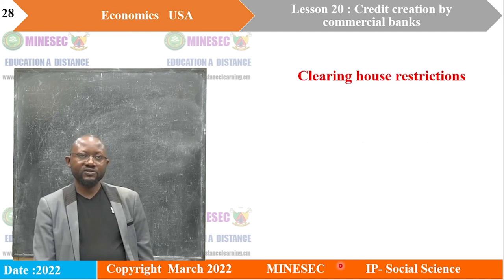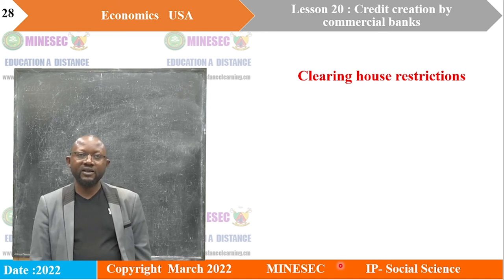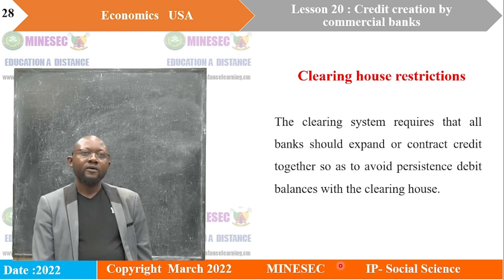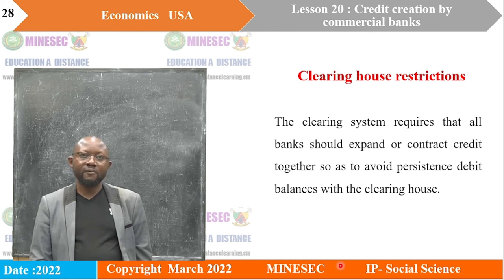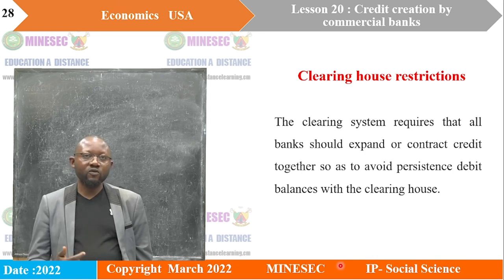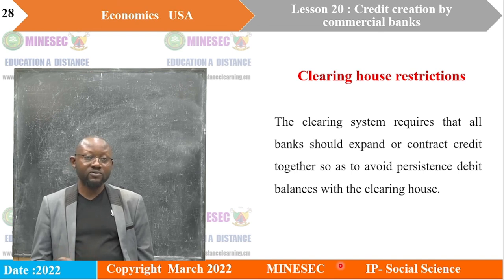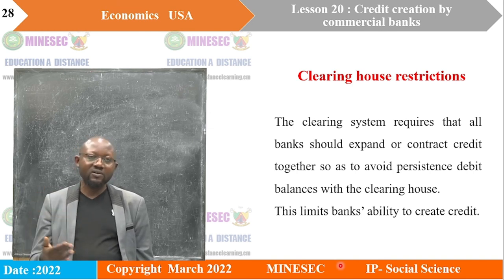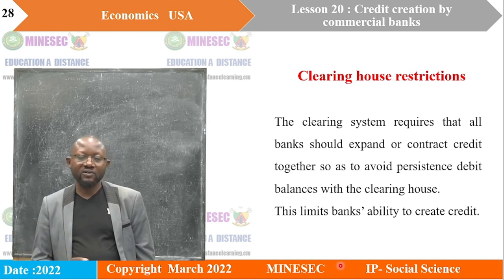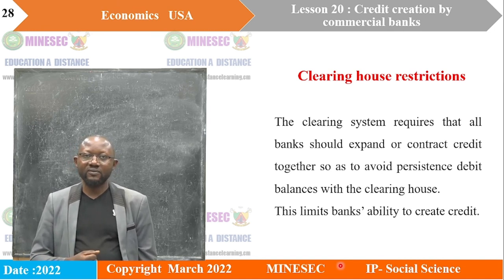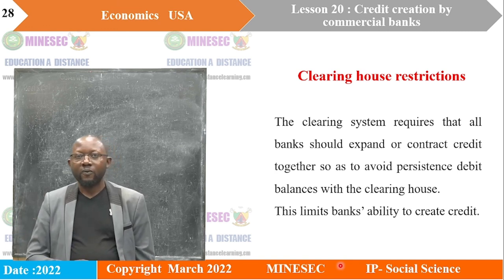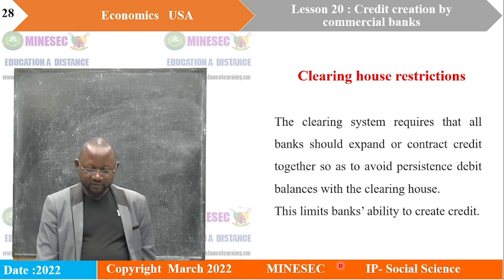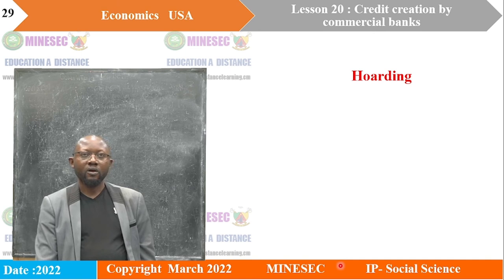Clearinghouse restrictions also limit credit creation. The clearinghouse is a financial institution that settles inter-bank indebtedness. The clearing system requires that all banks should expand or contract credit together, so as to avoid persistent debit balances with the clearinghouse. This means a bank cannot over-create credit while others are not doing the same, as it would end up with a negative balance of debits and problems at the level of the clearinghouse.